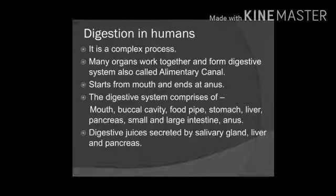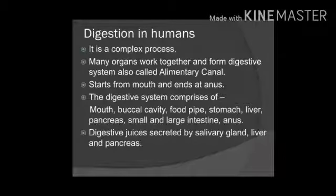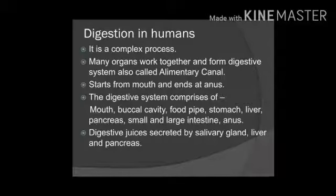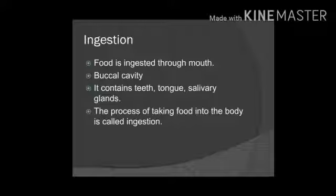Another name of the digestive system is the alimentary canal. Digestion starts from the mouth and ends at the anus. The digestive system comprises the mouth (buccal cavity), food pipe (also known as esophagus), stomach, liver, pancreas, small and large intestine, and anus. Various digestive juices are secreted by salivary glands, liver, and pancreas, which also work on the food.